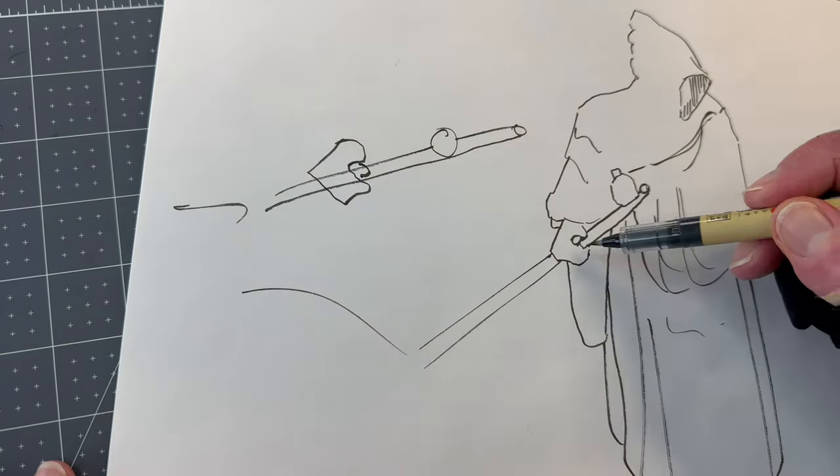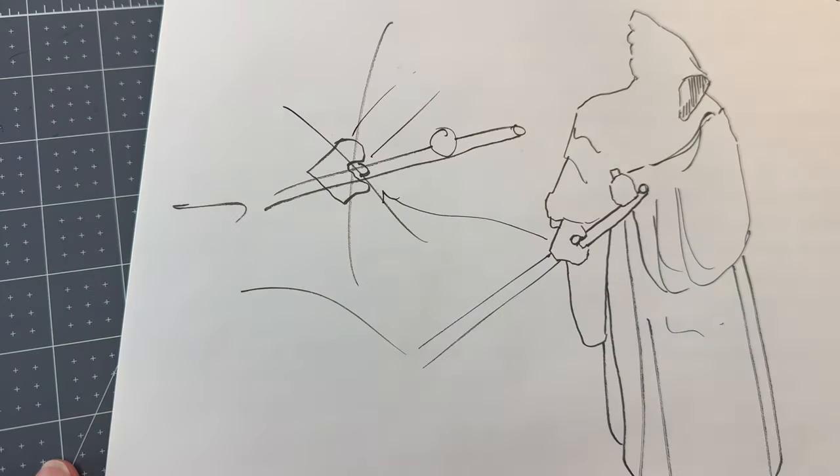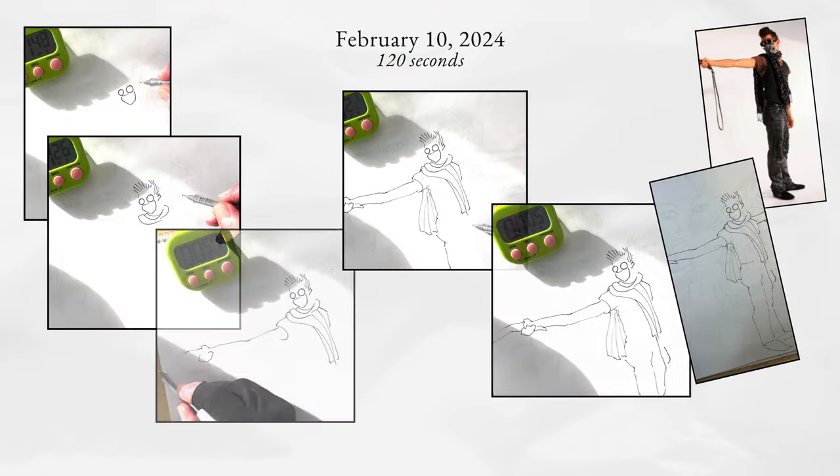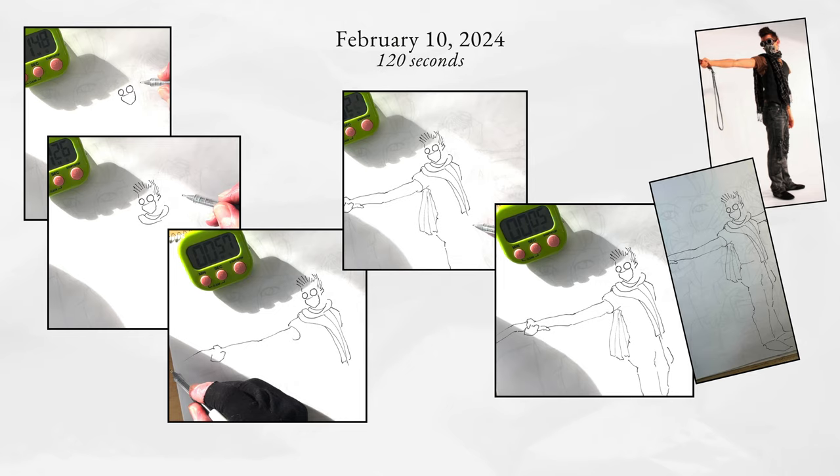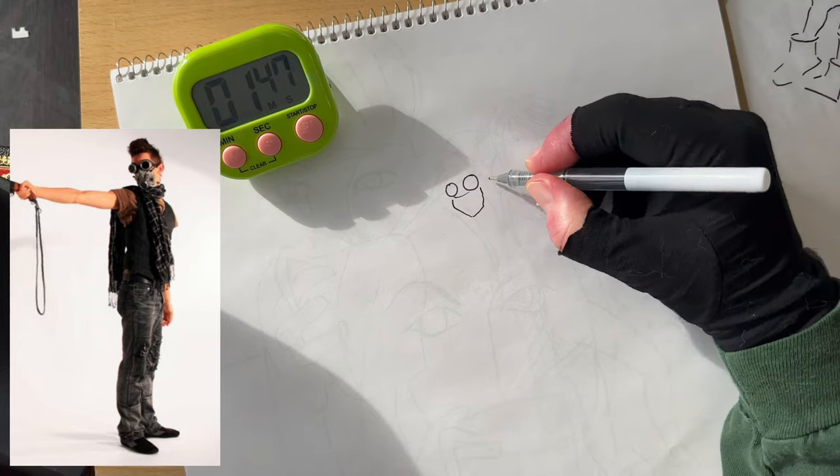For example, here, where the hand grabs the sickle handle, we need to plan the layering in an instant. 120 seconds flashes by very quickly. Don't get discouraged by the results on your first try. I repeated several times the poses that were more challenging.